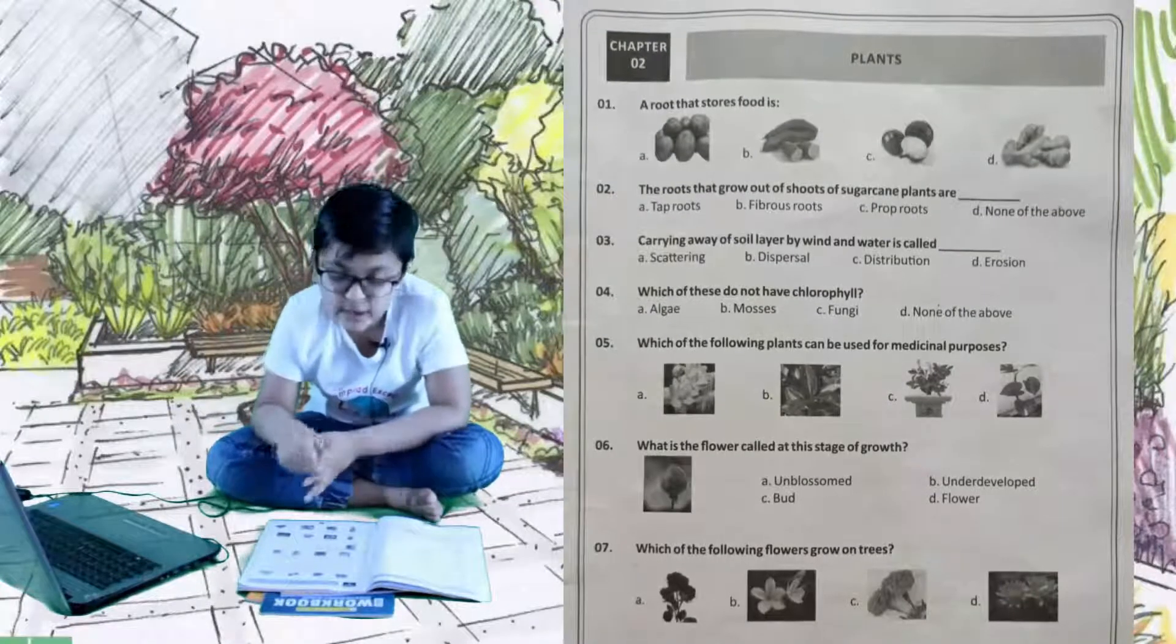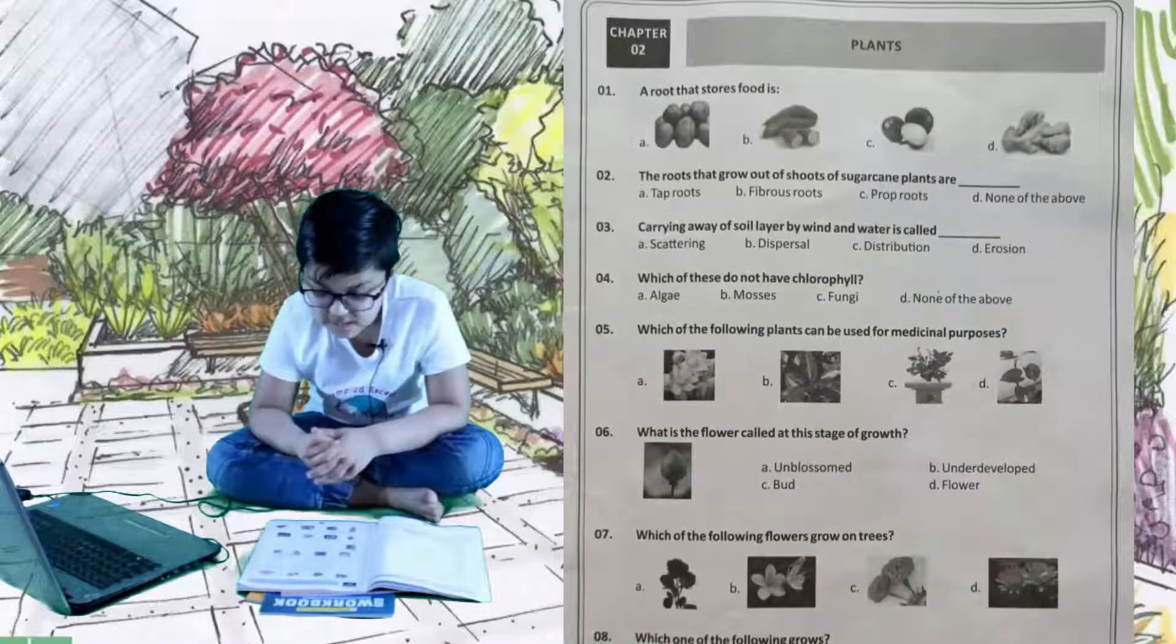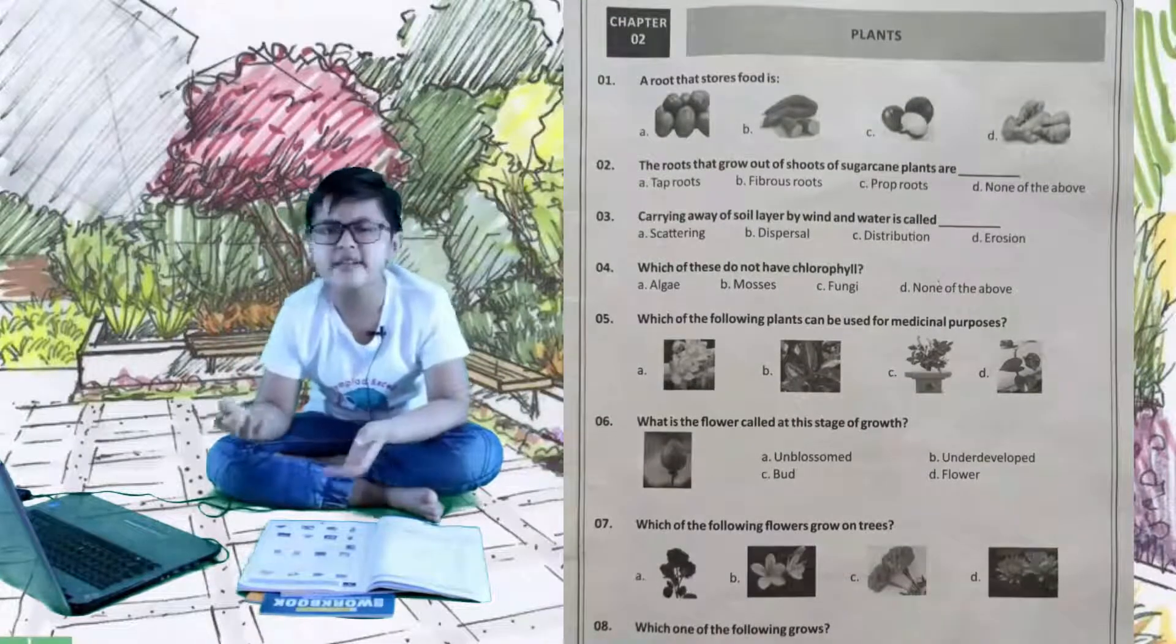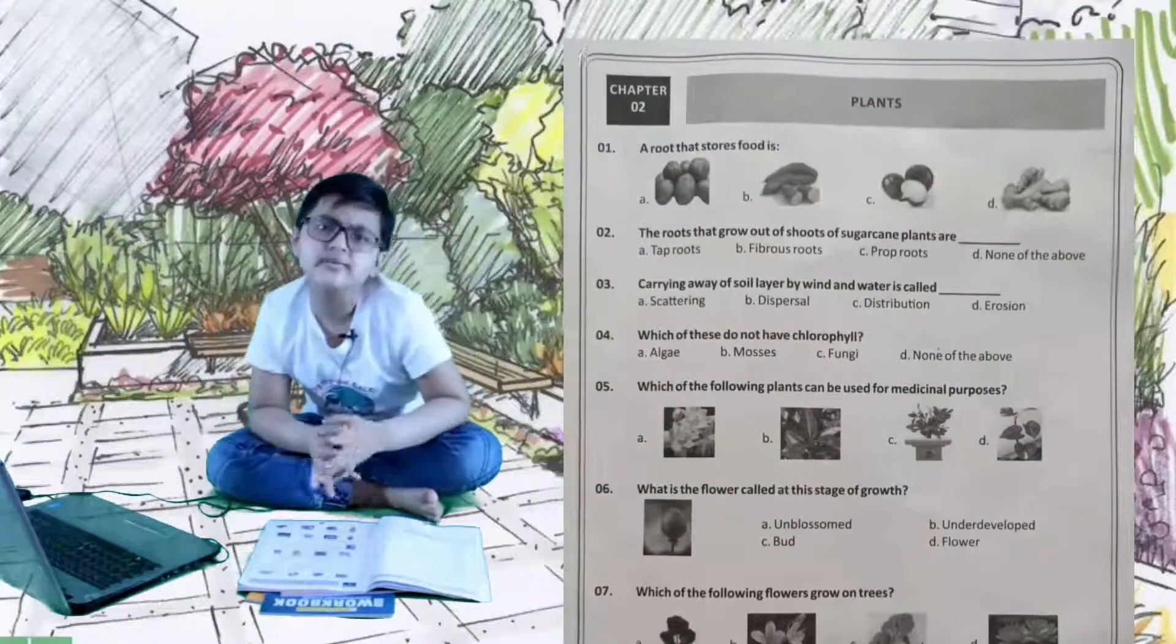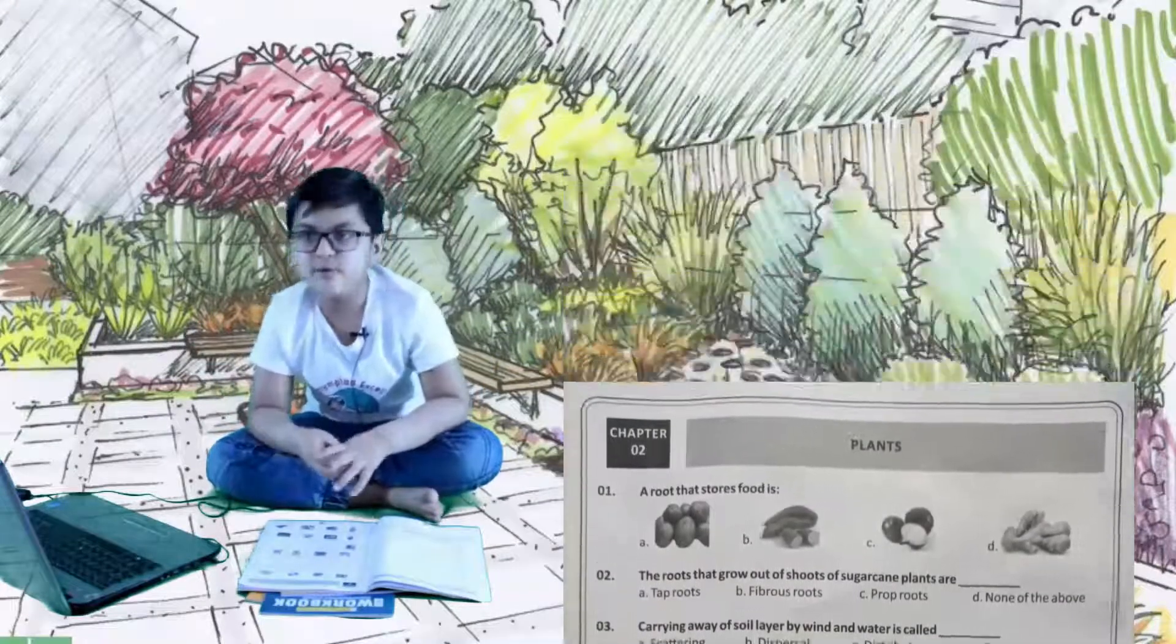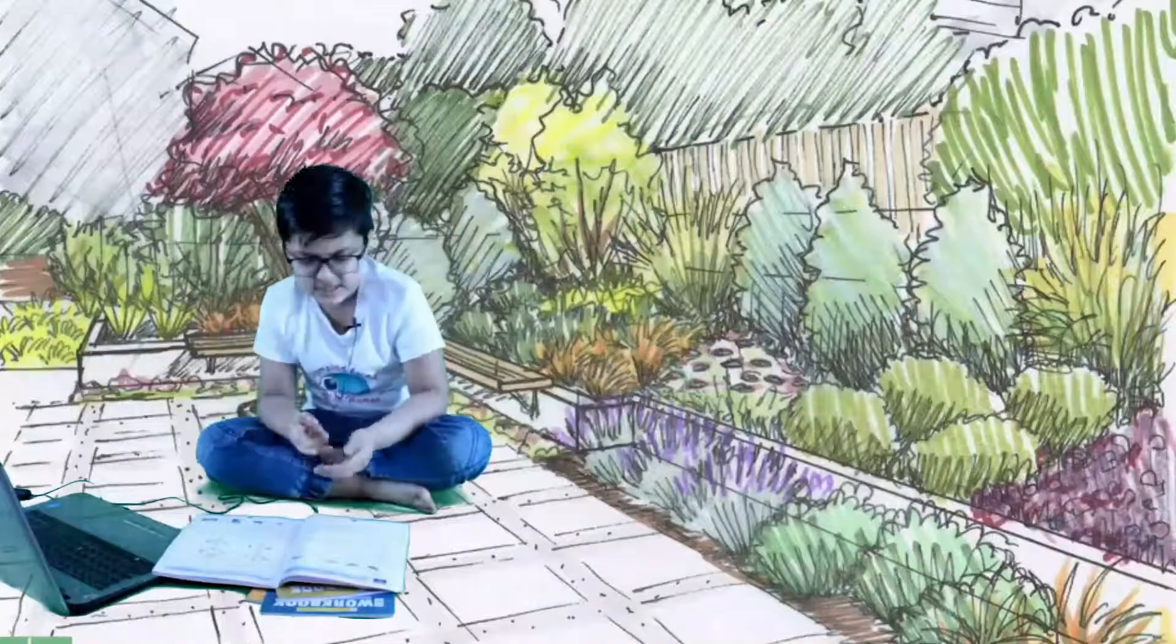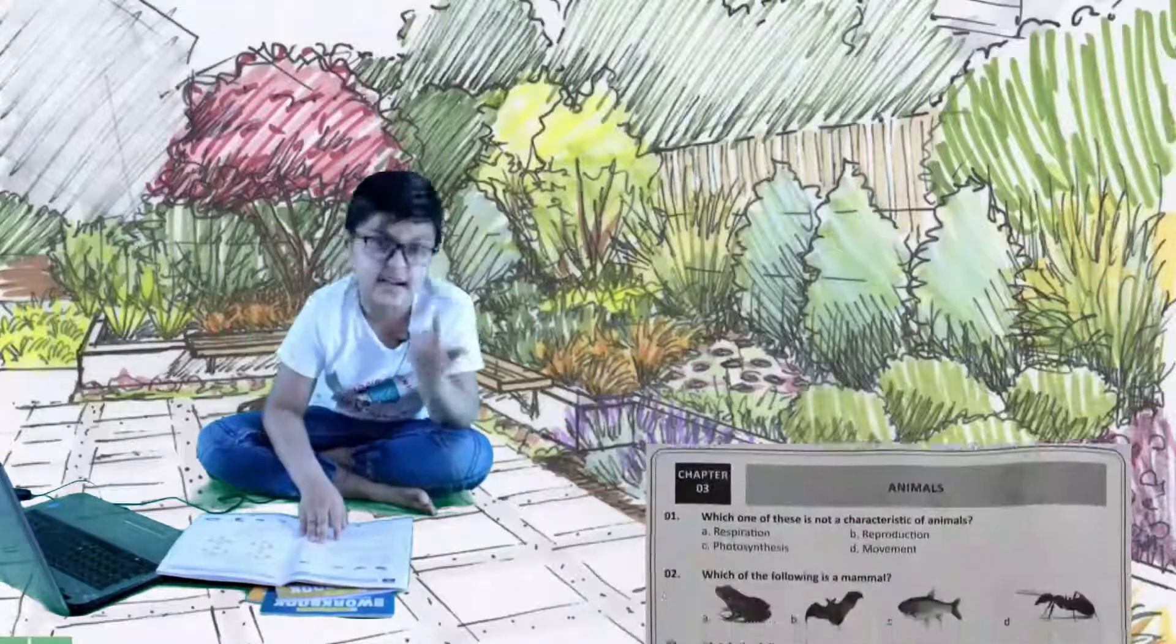Let's do the second question. The roots that grow out of shoots of sugarcane plants are: A is tap roots, B is fibrous roots, C is prop root, and D is none of these. The right answer is B, obviously, because they have fibrous roots. Let's move to next chapter, chapter 3 is animals.